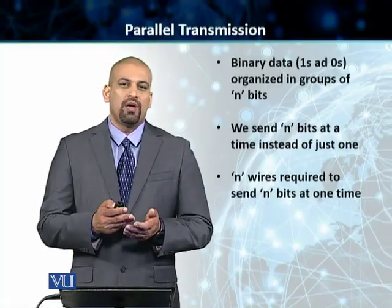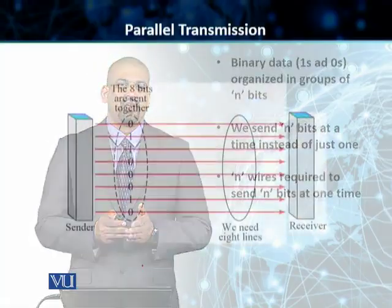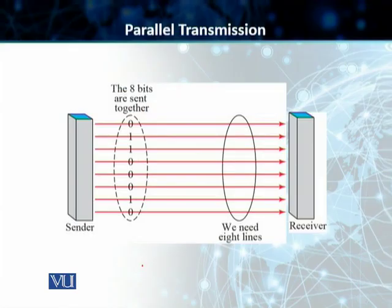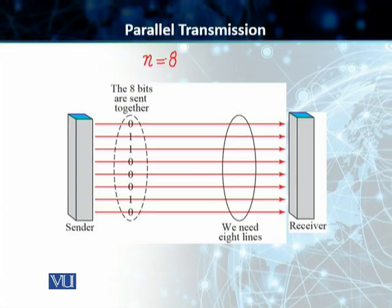As mentioned, n wires are required. Looking at the slide, what you see is a sender with eight wires, so the value of n is eight. These eight wires are capable of carrying eight different bits, and they need to be up and running from the sender to the receiver at all times if you are going to be sending eight bits simultaneously. Otherwise, there will be a loss of bits.